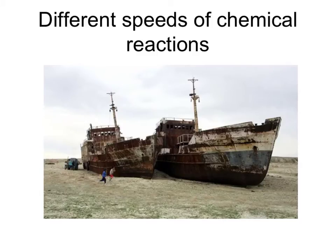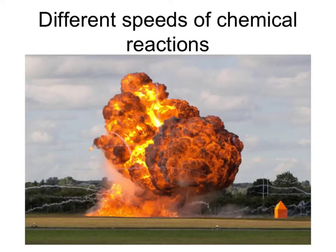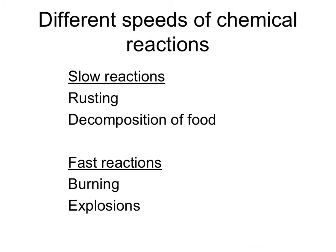So some chemical reactions, such as rusting shown here, are very slow. Whereas others, like this explosion shown here, are very fast. Here's four examples of chemical reactions, but the specification says you only have to know three of them. That the slow reactions involve rusting, but also decomposition of food is slow. The fast reactions you need to know are both burning and explosions.